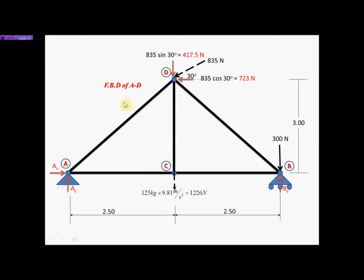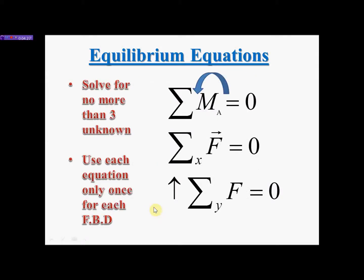We have created a successful FBD. We have labeled it, resolved the forces, converted the mass into a force, and replaced the supports with the appropriate number of forces. We are ready to do our calculations using the equilibrium equations to solve for our reactant forces. There are three equilibrium equations. The first is summation of moments about point A, where counterclockwise rotation is positive and equal to zero — meaning clockwise rotation is negative. During calculation you must use a sign convention.